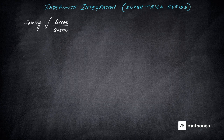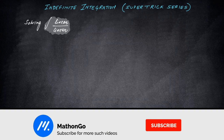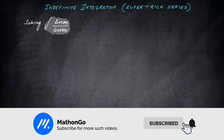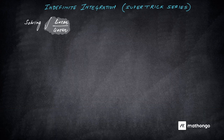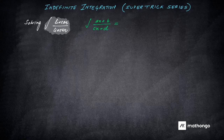Let us see another super trick in the super trick series of indefinite integration. In this series we are going to talk about solving a pretty simple formula — linear by linear. If you know the trick, this will help you save those 15 seconds which are very crucial in the exam. So if we have to write the formula, it is ax plus b divided by cx plus d, which is what you are integrating.